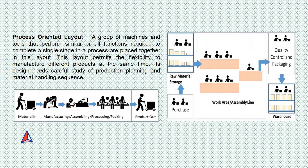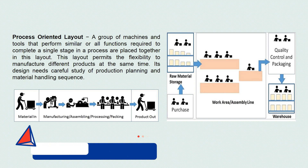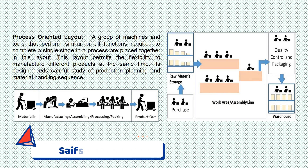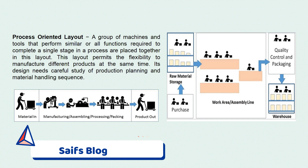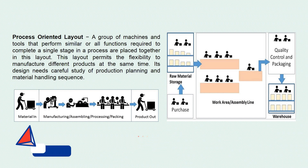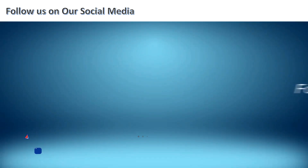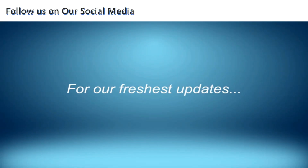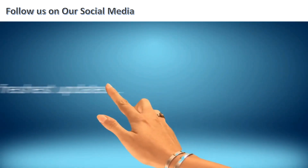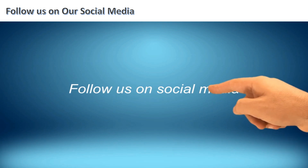The second is the process-oriented layout, where a group of machines and tools that perform similar or all functions required to complete a single stage in a process are placed together. This layout permits the flexibility to manufacture different products at the same time. Its design requires careful study of production planning and material handling sequence, and allows for efficient logistics management.